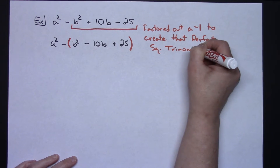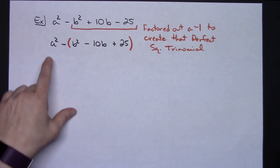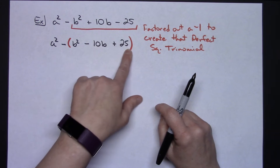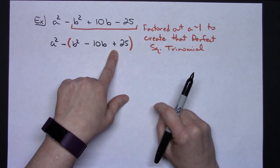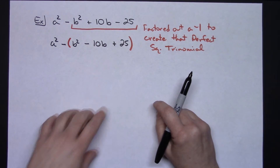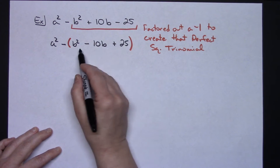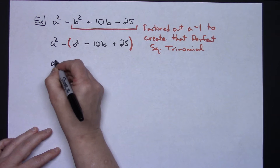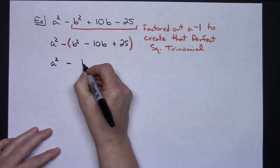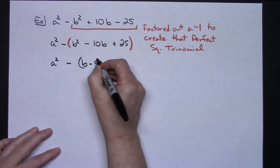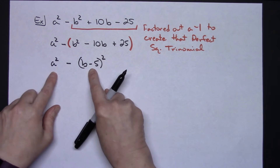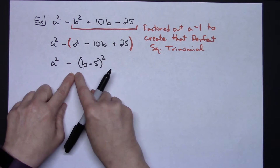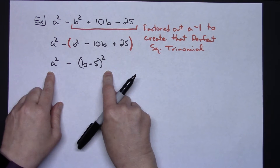Looking at what we've got now: I have an a squared, I have a minus, and then the expression in parentheses will factor into a perfect square binomial — b minus 5 quantity squared. So I'll have a squared minus the b minus 5 quantity squared. I have two terms, they're both perfect squares, and I have a subtraction in between, so this is definitely the difference of two squares.